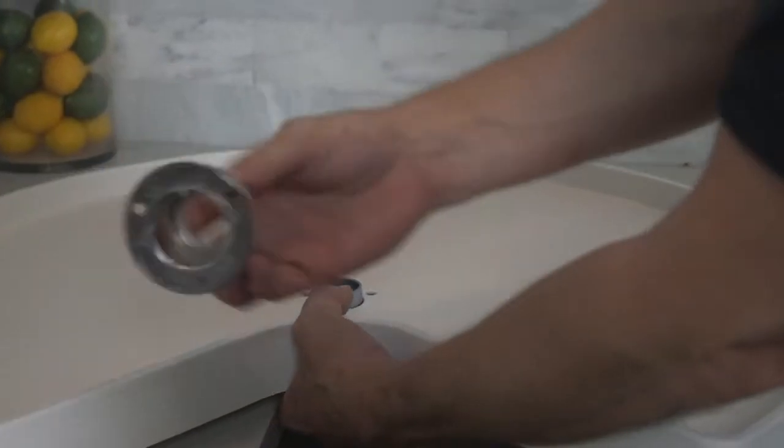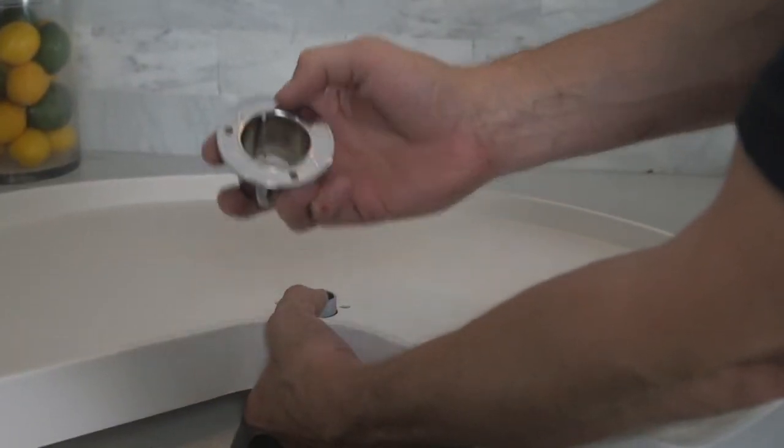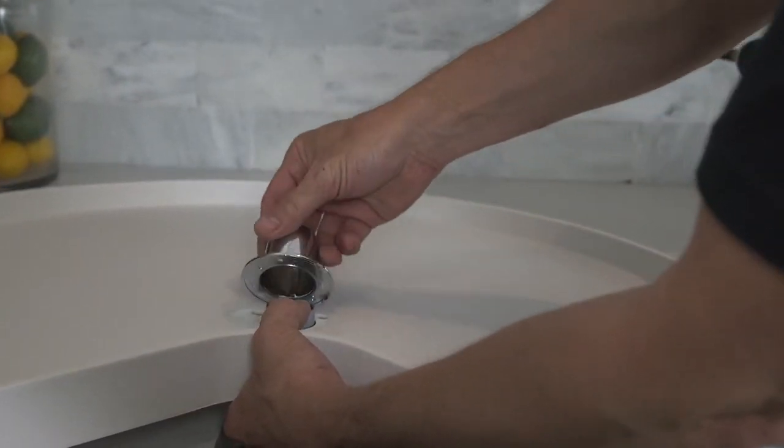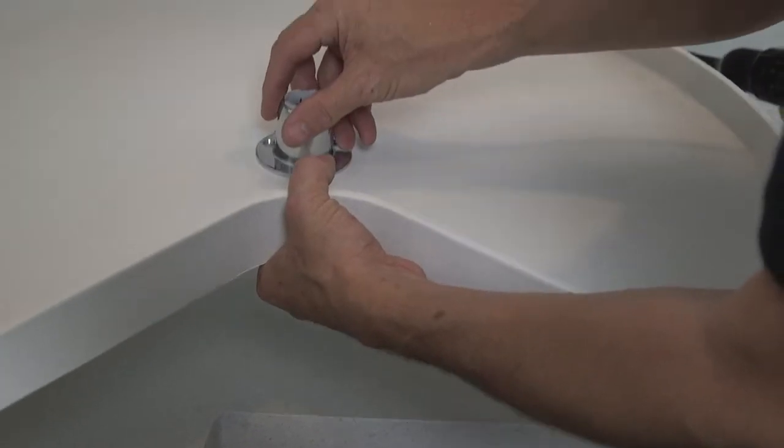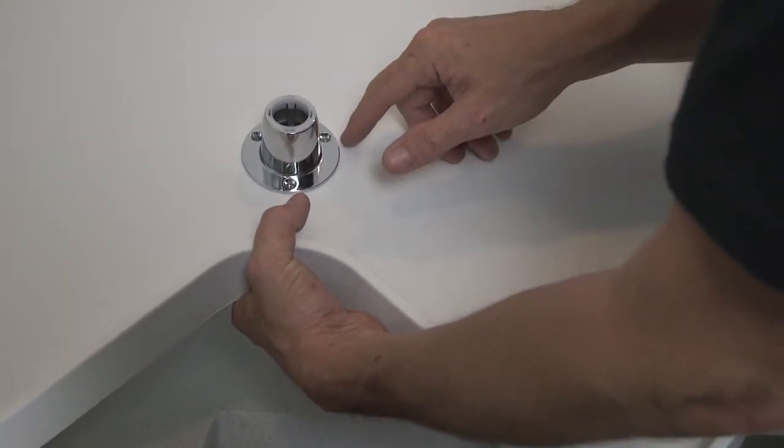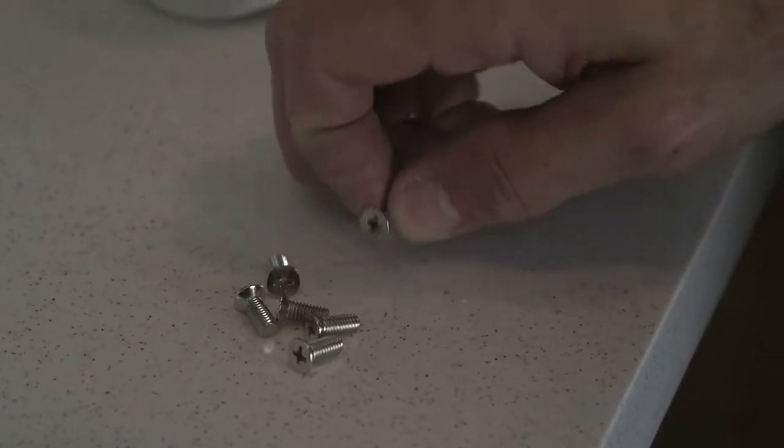From the top, align the rib inside the shelf hub cone with the groove on the shelf hub. Secure with three number eight by half inch flathead machine screws that are provided.